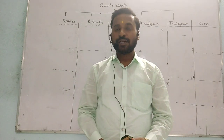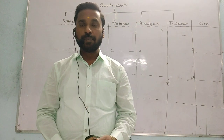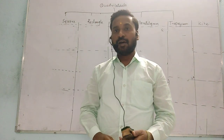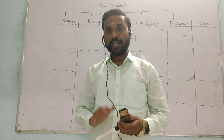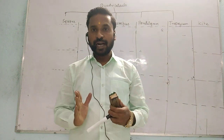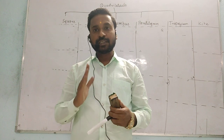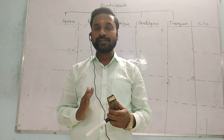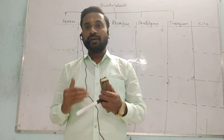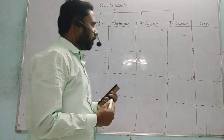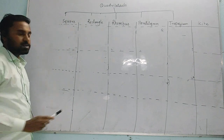Good evening students. Today we will study a very important topic of mathematics — the geometry section — that is quadrilateral. So what is a quadrilateral? A quadrilateral is a four-sided polygon where the sum of all four angles equals 360 degrees. Now there are six different types of quadrilaterals.